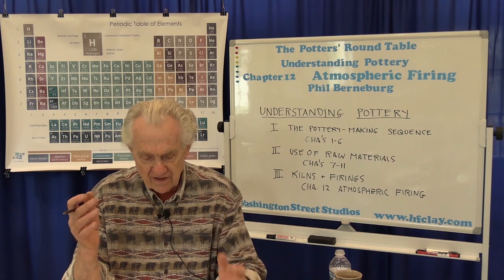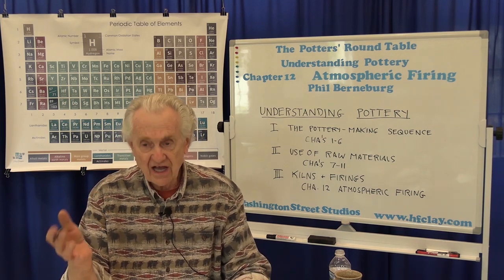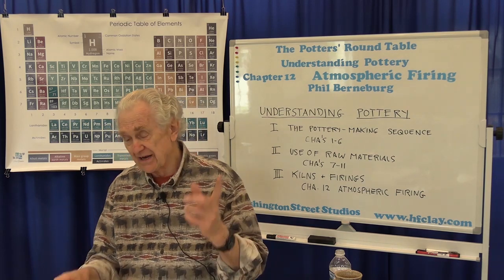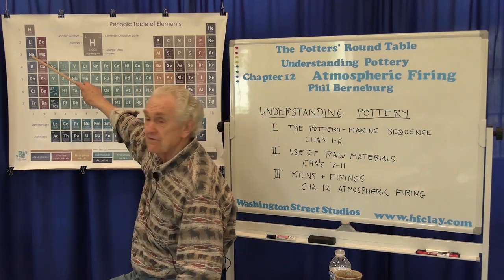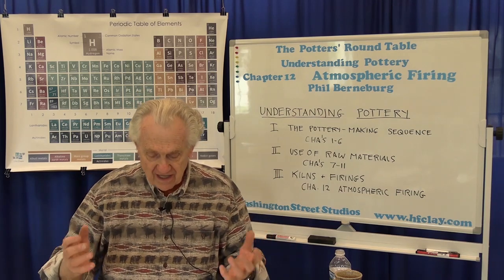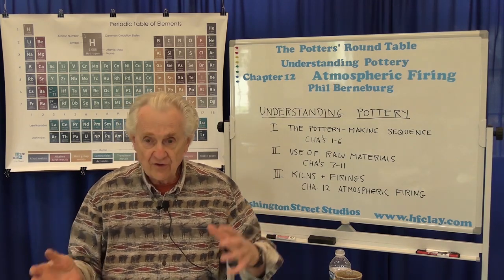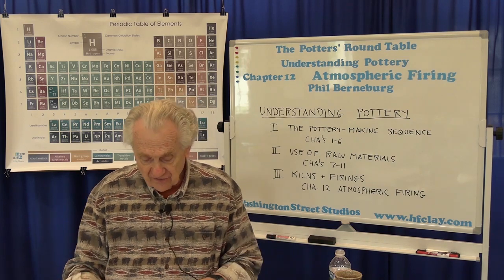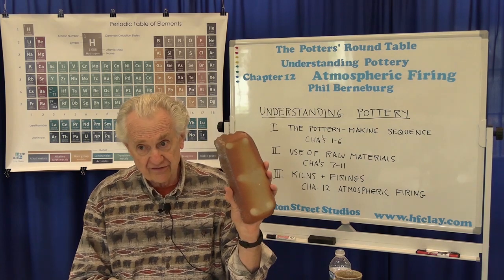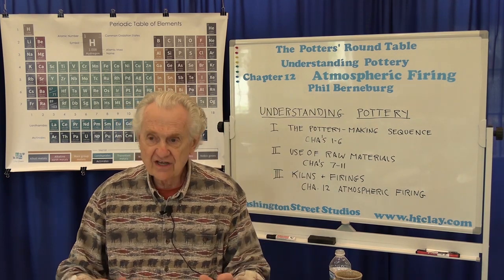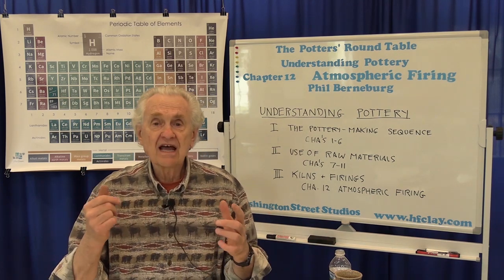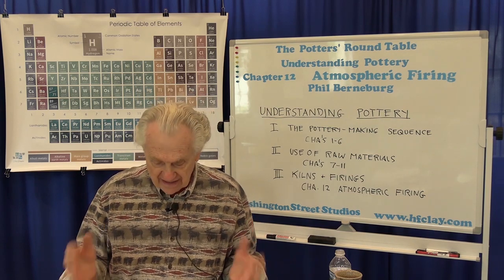Salt firing involves the addition of salt to a kiln at very high temperatures. The salt actually vaporizes and the sodium fumes — sodium is a flux, a very powerful flux. The sodium coming from the salt in vapor form moves throughout the kiln, reacts with the bare clay, and can also react with any existing glazes. If there's bare clay, the first thing it can produce is flashing — similar to wood firing. The second thing it can do is react with the clay and produce a glassy coating or glaze in place.